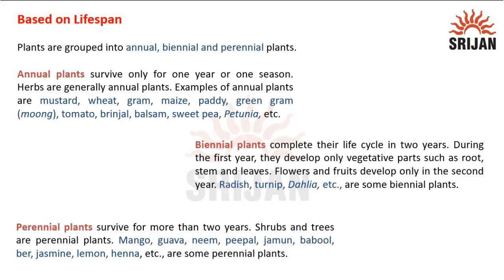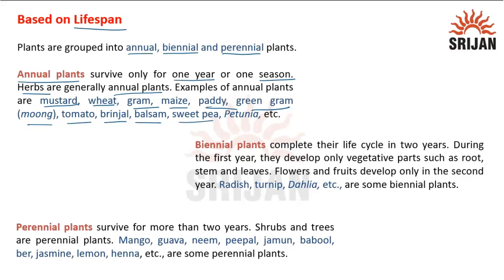We will now look at grouping based on lifespan. Plants are grouped into annual, biennial, and perennial plants. Annual plants survive for only one year or one season. Herbs are generally annual plants. Examples are mustard, wheat, gram, maize, paddy, green gram or moong, tomato, brinjal, balsam, sweet pea, petunia, etc.